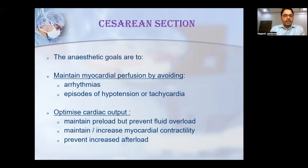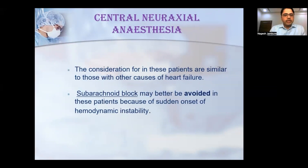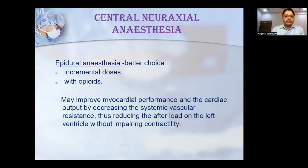For cesarean section, the anesthesia goals are to maintain cardiac output by maintaining myocardial perfusion, avoiding arrhythmias, hypotension, and tachycardia; optimize cardiac output by maintaining preload while preventing fluid overload; maintain and increase myocardial contractility; and prevent increase in afterload. Regarding neuraxial anesthesia, subarachnoid block should be avoided due to sudden onset hemodynamic instability. Epidural anesthesia is the better choice as it decreases systemic vascular resistance, reducing afterload on the left ventricle without impairing contractility, administered in incremental doses with opiate top-up as adjuvant.